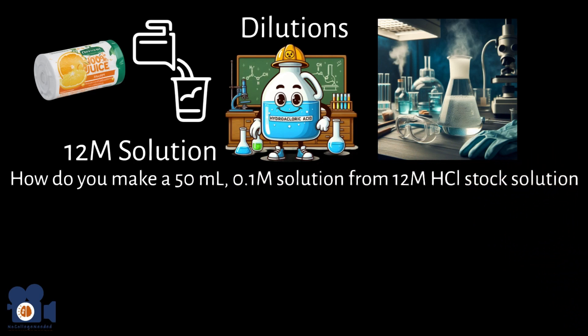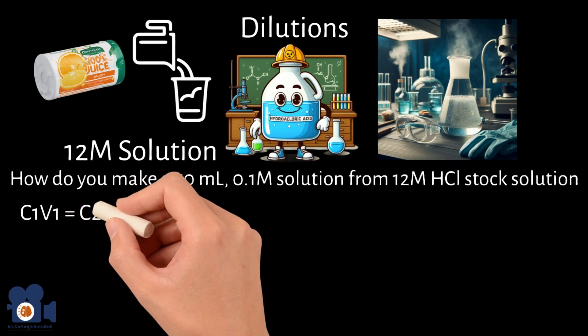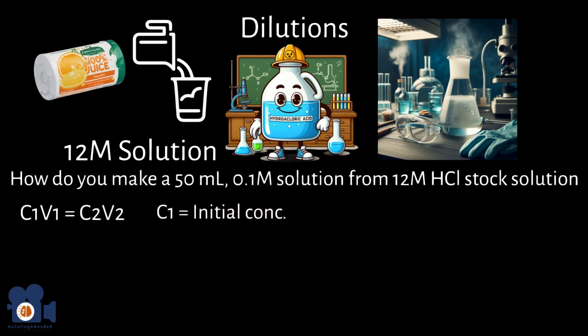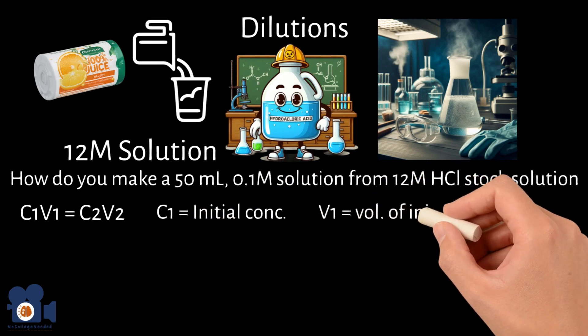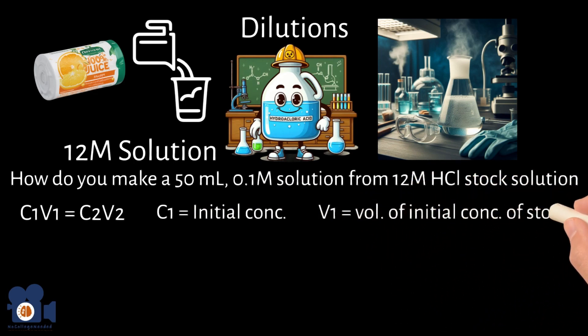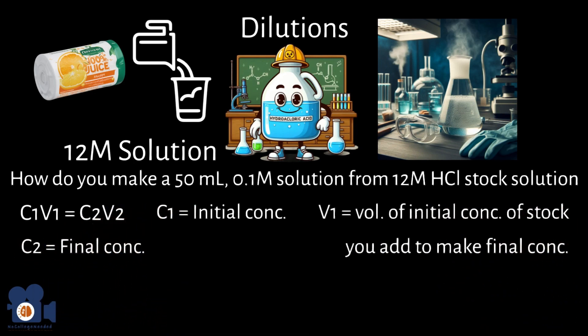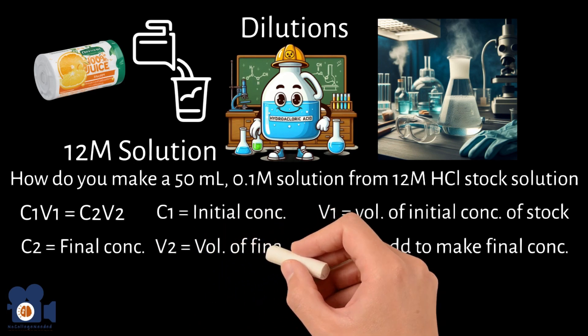To start, you use the formula C1V1 equals C2V2, where C1 is the initial concentration. V1 is the volume of the initial concentration of your stock solution you're going to add to make the final concentration. C2 is the final concentration, and V2 is the total volume of the final concentration.